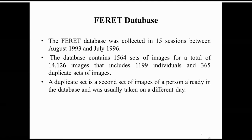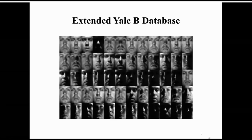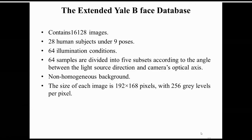For the Extended Yale database, the contrasts are quite poor, which presents challenges for recognition. The database contains 16,128 images of 28 human subjects under nine different poses and 64 illumination conditions. The 64 samples are divided into five subsets according to the angle between the light source direction and camera optical axis, with a non-homogeneous background. Each image is 192×168 pixels with 256 gray levels per pixel.